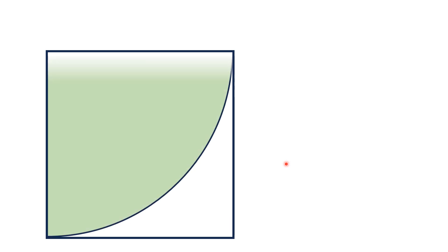Hello everyone. In this video, given is a square in which a quarter circle is inscribed such that the radius of this quarter circle is equal to the side of this square.